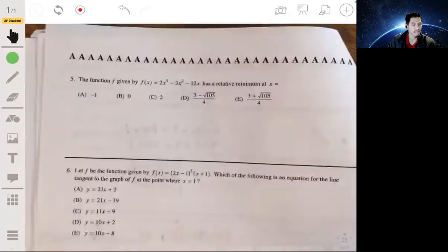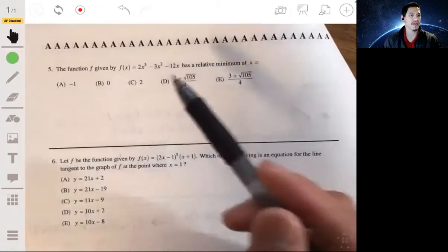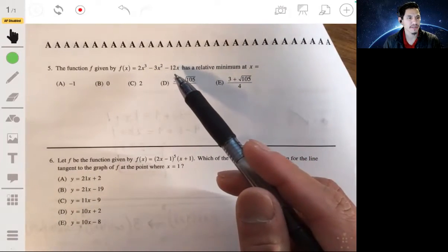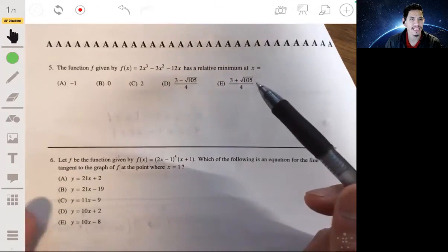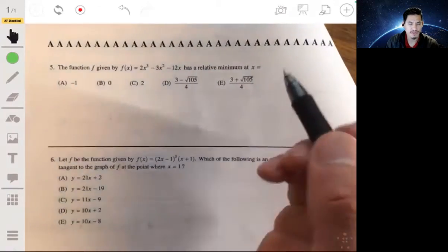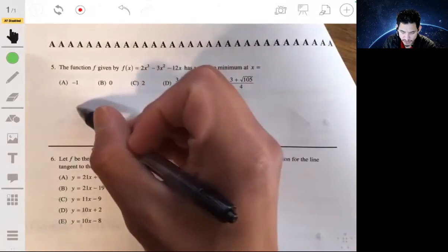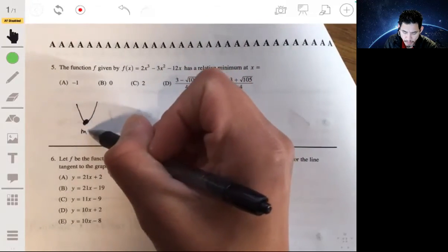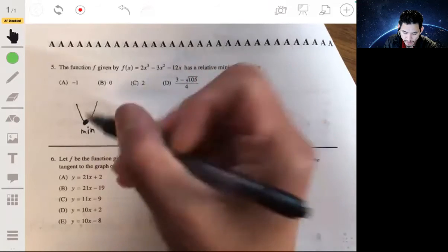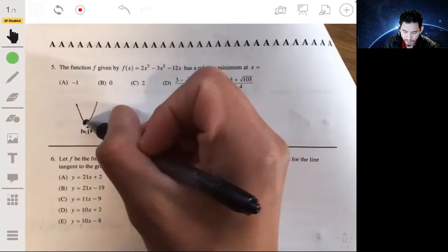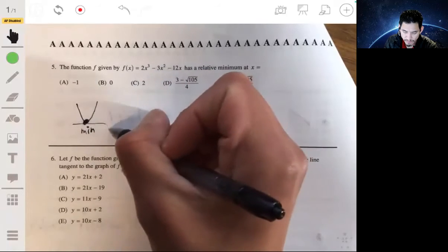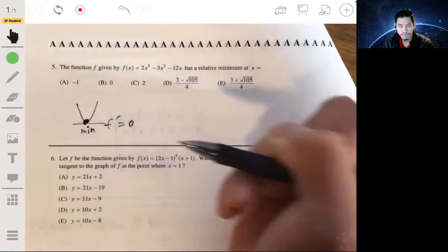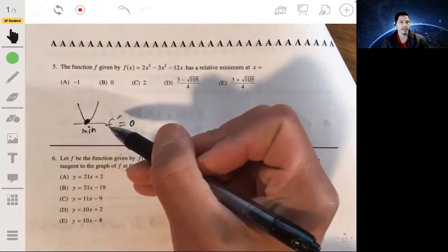Problem five. The function f given by f of x equals 2x cubed minus 3x squared minus 12x has a relative minimum at x equals. A function has a relative minimum when the derivative at that point would be 0, because that would be the slope of a horizontal tangent line.